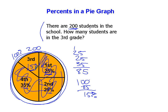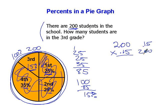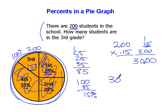Is 15% the same thing as 15 students? No. What you have to do is take 200 and multiply that times 0.15, because 15% is 0.15. I'll flip it around the other way — a lot of you are doing it this way, and it's actually easier because I can put my two zeros down here. Five times two is 10, carry the one. One times two is two, plus one is three. Put a decimal point two spots over, and so the answer is 30. 30 students are in the third grade.